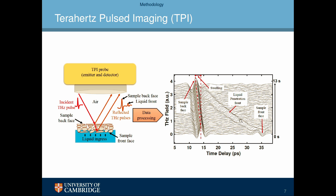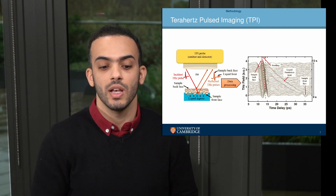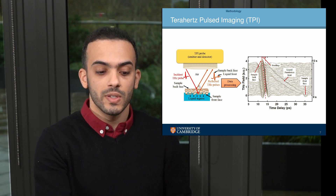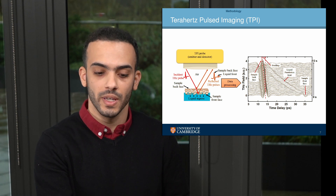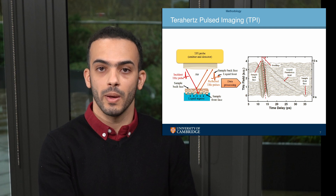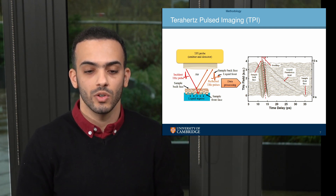By tracking the positive peak of this liquid penetration front, we can get the liquid penetration profiles, which is the penetration depth as a function of time for each sample. For swelling samples, which is not the case for the samples in this study, there is an increase in thickness. Therefore, this positive peak shifts, and by tracking the shift in this positive peak, we can get an idea of the swelling behavior as a function of time.